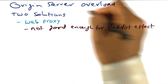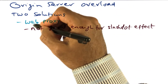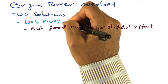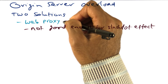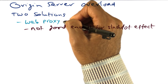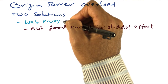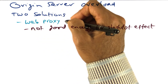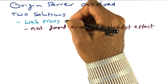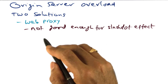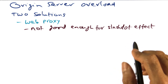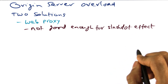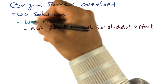In general, there are two solutions to the origin server overload problem. The first solution is to have a web proxy, and you might be familiar with this already because every organization tends to have a web proxy so that they can limit the amount of requests that have to go out of an organization. And that way, if users of an organization are trying to access popular content from the internet, the local web proxy can directly serve that content to the requesters. But it turns out that the web proxy solution is not good enough for what is called a slashdot effect — that is, if there is breaking news and everyone wants to get the content, they will have to get the fresh content. Proxy's not good enough for that.